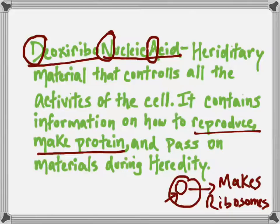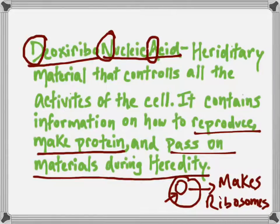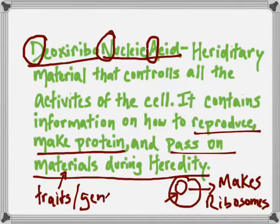Deoxyribonucleic acid also passes on materials during heredity. When a body reproduces, it's the DNA that passes on the different traits and genes to the new offspring. It should be more like traits or genes during heredity. So it's what passes on traits from parents to offspring, and that's all from the DNA.